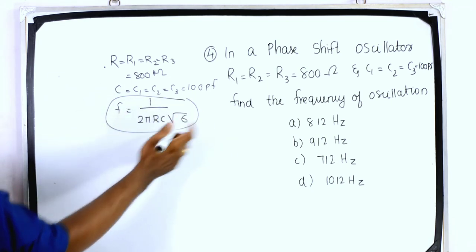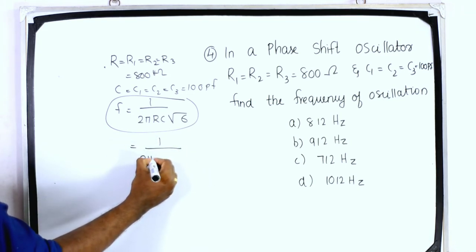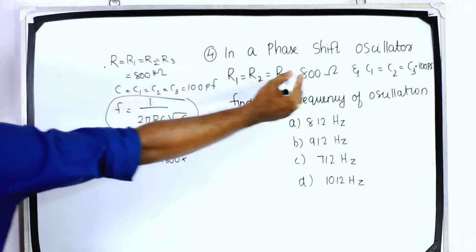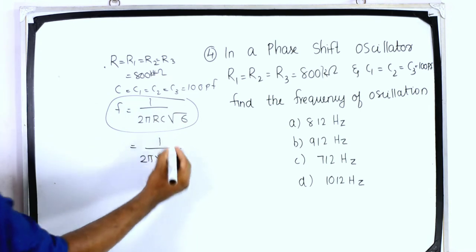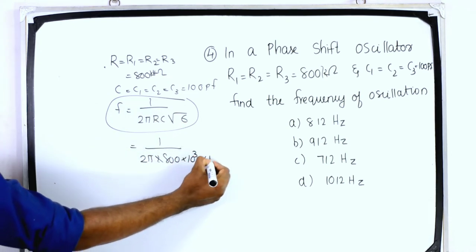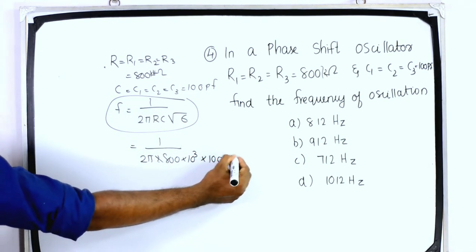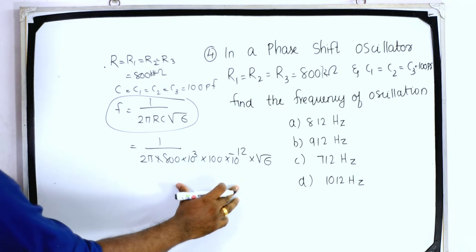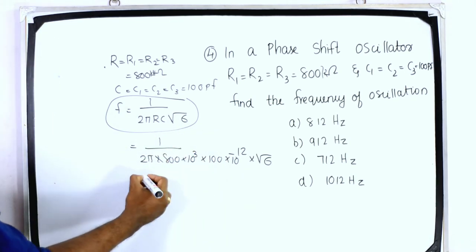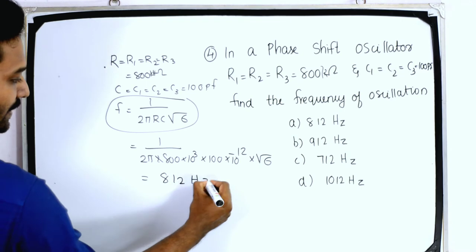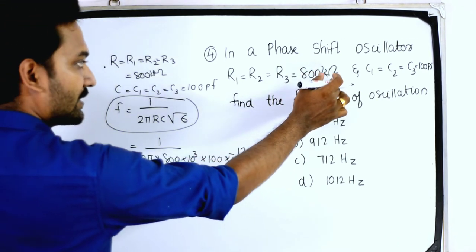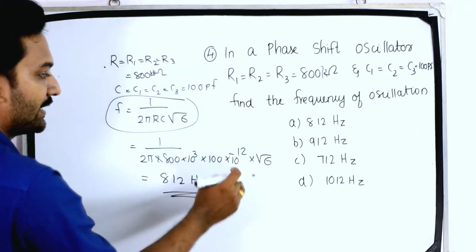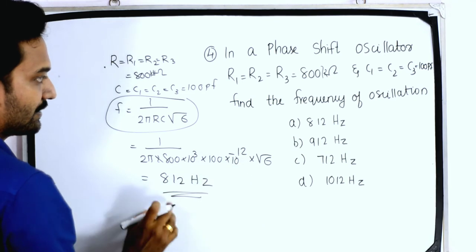For a phase shift oscillator, the frequency of oscillation is f = 1 / (2πRC√6). Substituting: f = 1 / (2π × 800 × 10³ × 100 × 10⁻¹² × √6). The answer is 812 Hz.